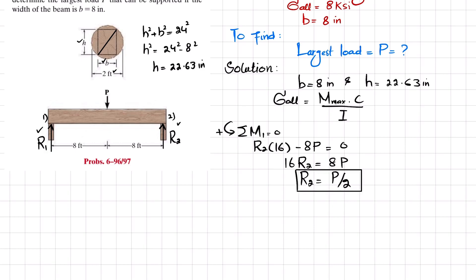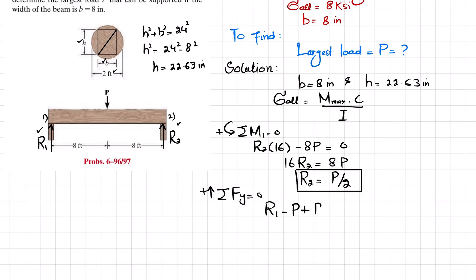Now we find R1 using another equilibrium condition: the sum of all forces in the y-direction equals zero, taking upward forces as positive. So R1 minus P plus R2 equals zero. Substituting R2 = P/2 gives R1 minus P plus P/2 equals zero, so R1 equals P/2. Now we have both R1 and R2 equal to P/2.